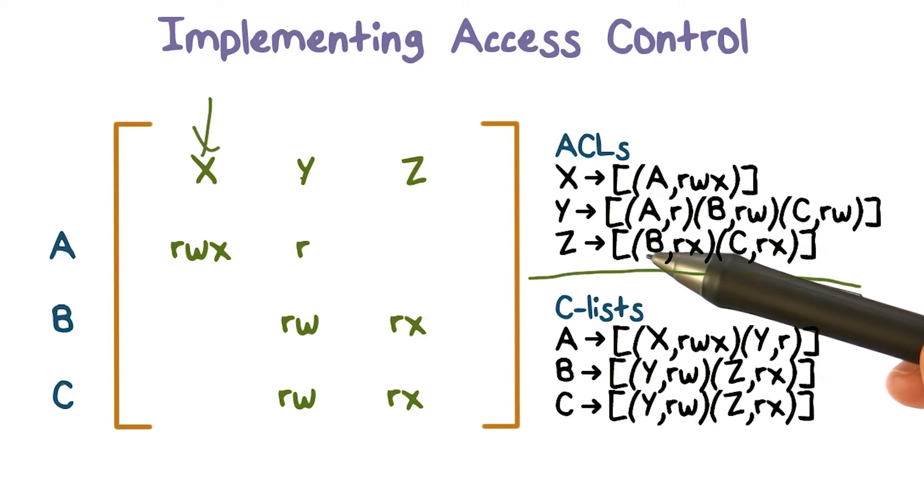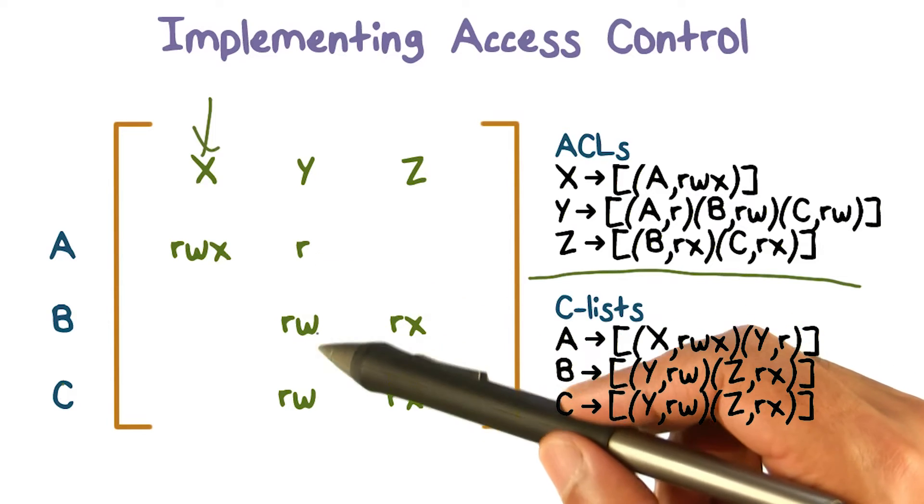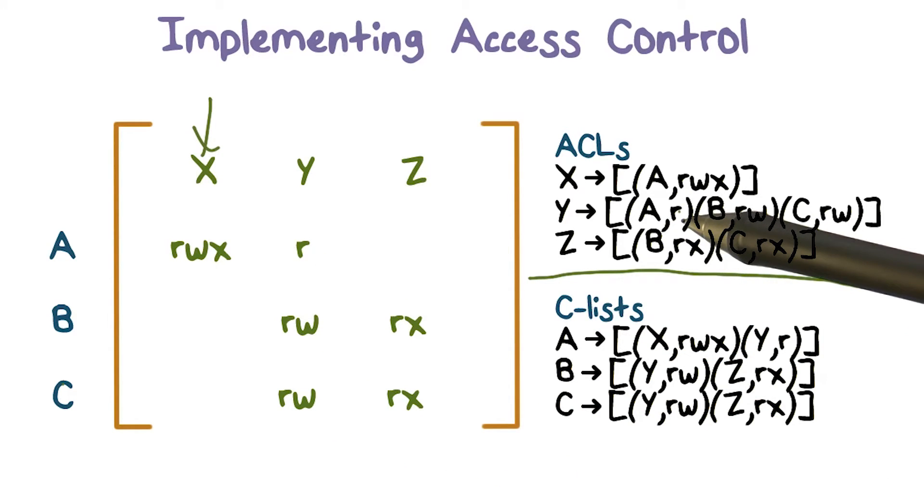Talking about ACLs, if you look at Y, the second resource we have here, we're going to have three entries in the ACL, one for each user. A is going to be able to read it, B can read and write it, C can read and write it too.